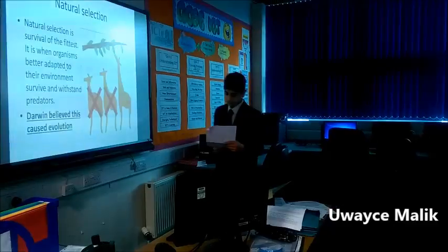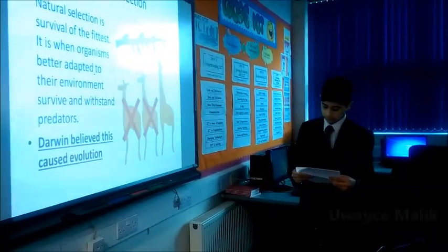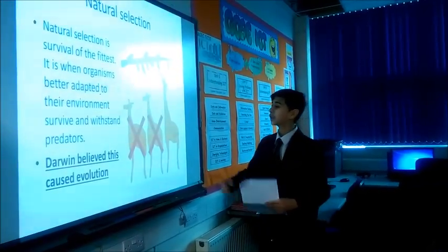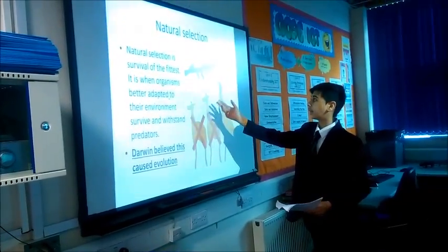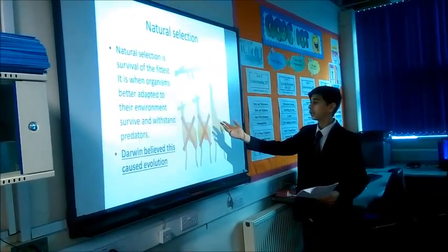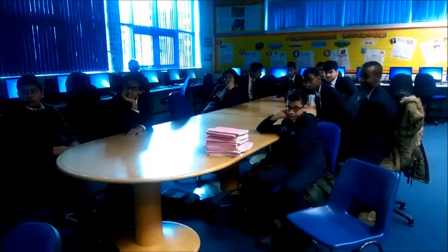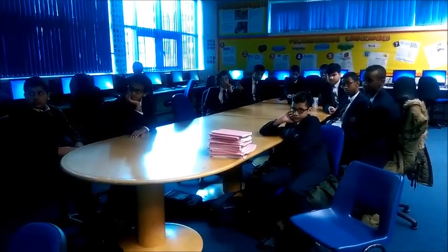Natural selection is when organisms better adapted to the environment survive and withstand predators and environmental changes, allowing them to breed and pass down their genes. As you can see here, the giraffe wasn't suited to its environment, and over time it mutated genes making it taller so it could reach food better. This allows the adapted genes to rise through the species, causing the weaker organisms to die out and giving way to new evolved organisms.